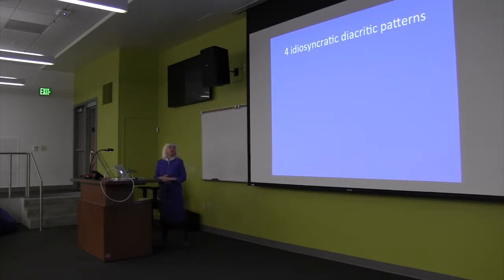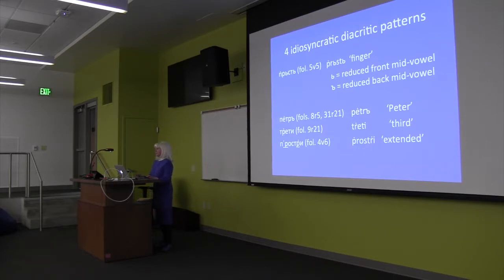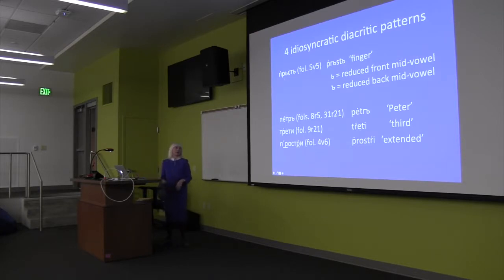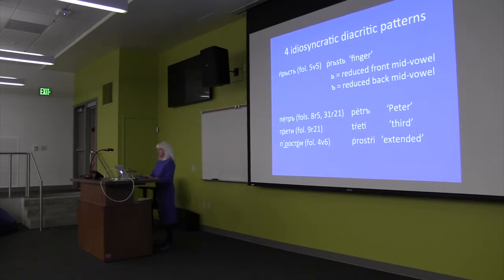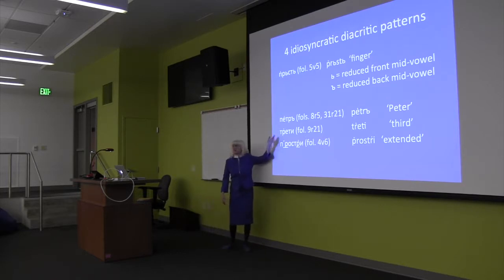There are four idiosyncratic diacritic patterns I had to deal with in the de Bratio Gospel, but I'm only going to talk about this one today. This is a dot, or something that might look like an accent mark or apostrophe, generally over or near the rci letter. Because scribes would add dots after writing the word, they might end up over another letter. This diacritic doesn't occur every time rci appears, and it also doesn't occur every time there's a word shape that's the environment for where he puts it — it only occurs occasionally, as if he remembered to do this every now and then.